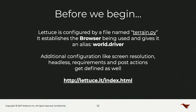Before we begin, Lettuce is configured by a file named terrain.py. If you're familiar with Selenium and Python, you'll probably see variables that don't appear to be referenced in the Python script — that's because they're being referenced in terrain.py. This is what Lettuce uses to reference variables and handle additional configuration like screen resolution, headless browser settings, and other requirements and post-actions. Lettuce is open source as well, so you can download it and start using it today with Selenium.